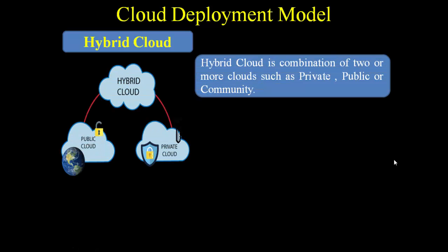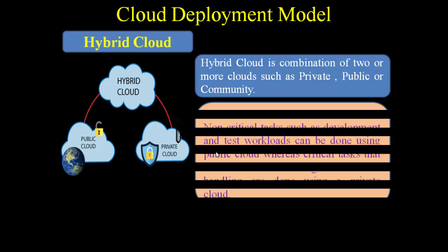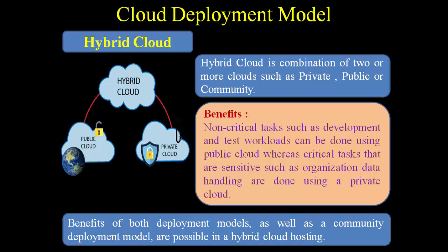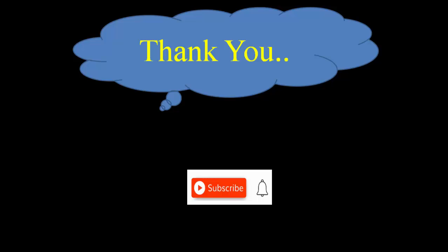Finally, hybrid cloud is the combination of two or more clouds — such as private, public, or community. The benefit is that non-critical tasks such as development and test workloads can be done using public cloud, whereas critical, sensitive tasks such as organizational data handling are done using private cloud. We get the benefits of both deployment models. This is the hybrid cloud where a combination of public, private, or community is possible.